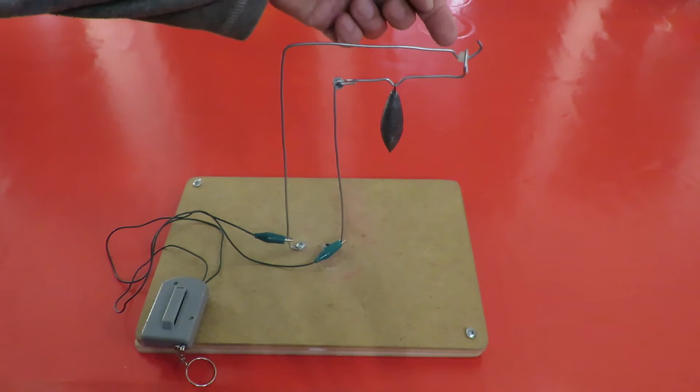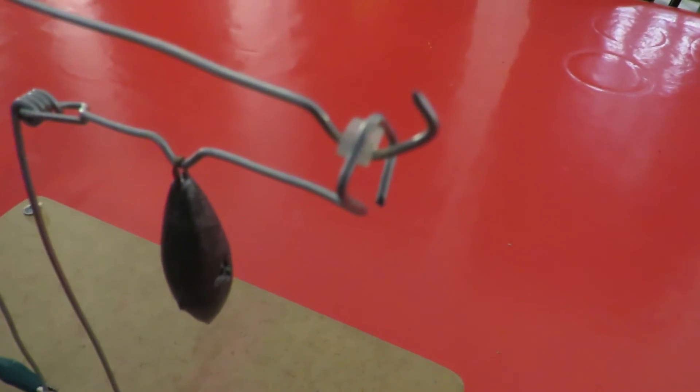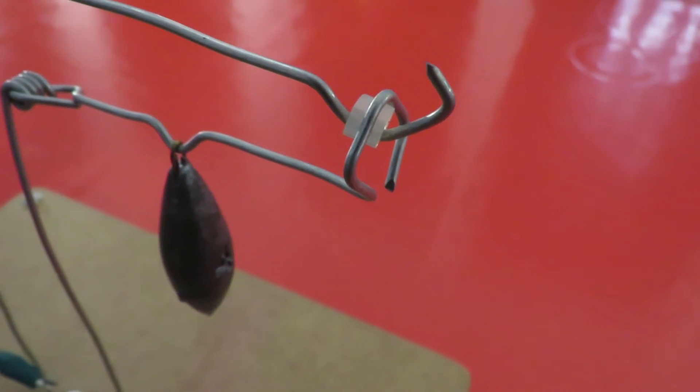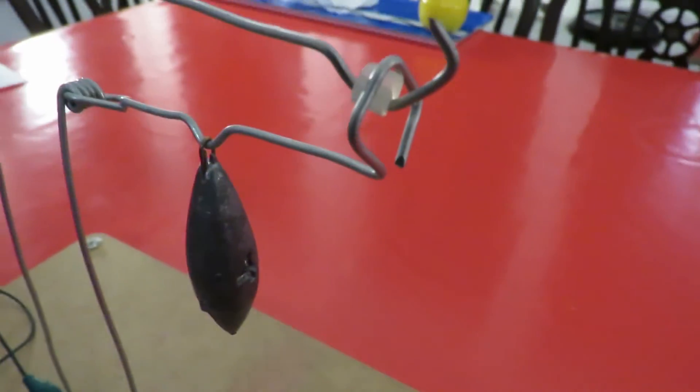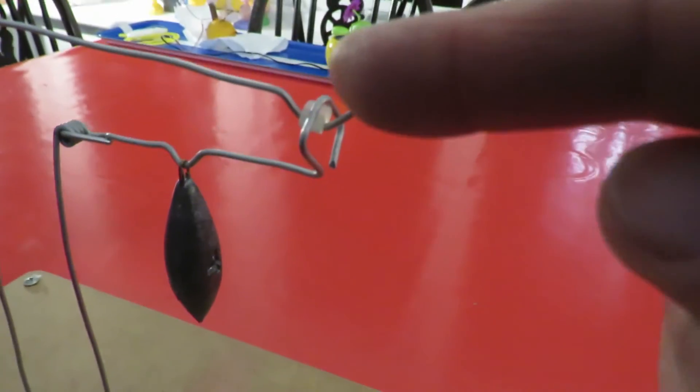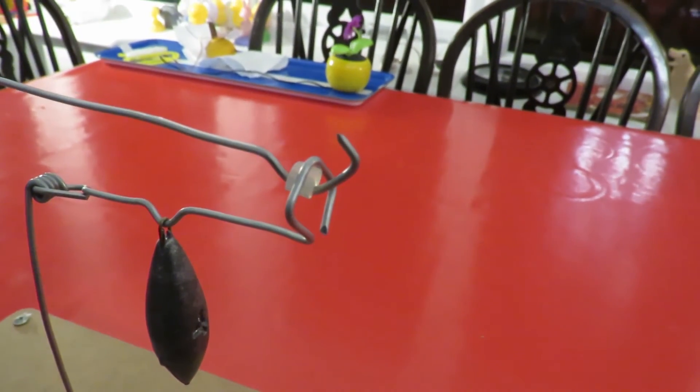Because I've got a piece of hot glue there. I suppose I could do a close-up. So there we are. That's the hot glue underneath this piece and above that piece so they don't make contact.